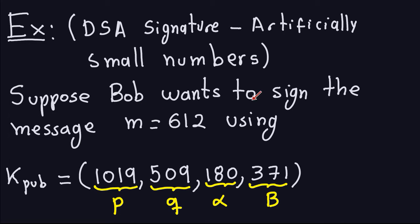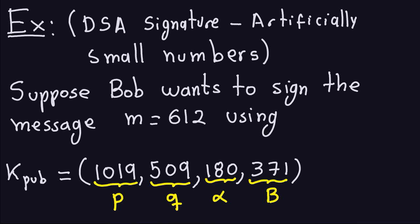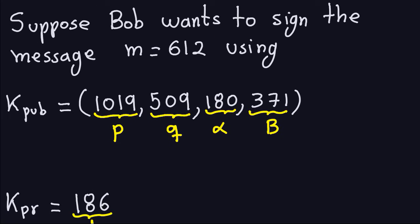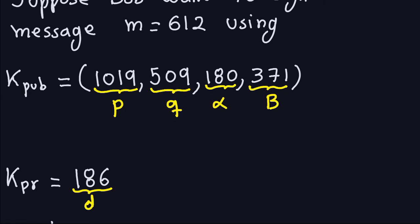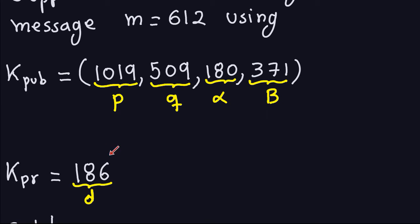Suppose Bob wants to sign the message 612. We use this public key: P, Q, Alpha, and B, where P is a prime number, Q is also a prime number, Alpha is a generator for a subgroup of order Q (meaning Alpha cubed equals one), and B equals Alpha to the private exponent. The private exponent D is 186, known only to Bob.